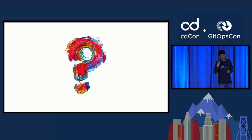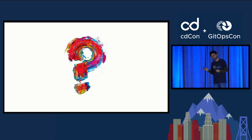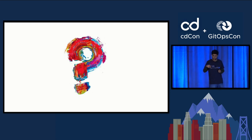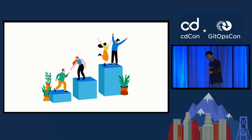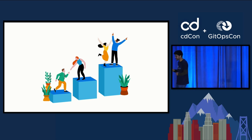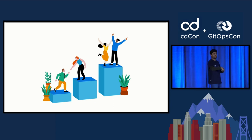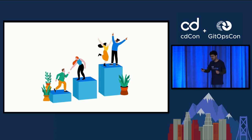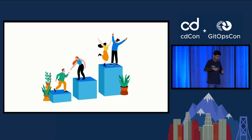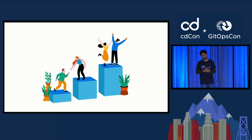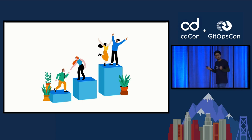Perspective-taking involves imagining oneself in others' positions and thinking about their thoughts, feelings, and motivations. Providing support is also important — where I work, we have a no-blame culture: there are no bad questions, people are free to ask anything, and we support each other. Offering support and encouragement to team members helps build empathy and trust within the team, making people feel valued and respected.